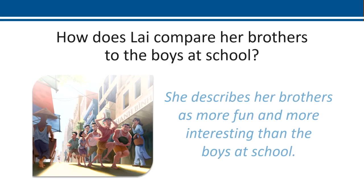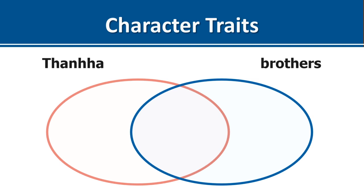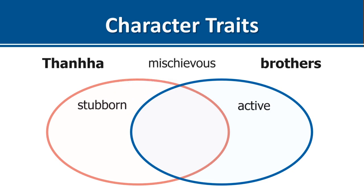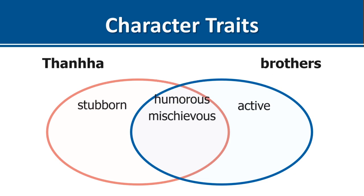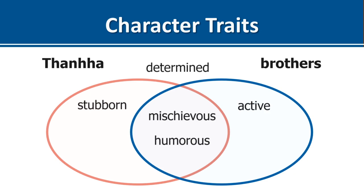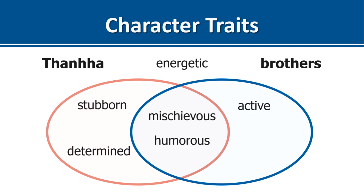Lai compares her brothers to the boys at school, describing her brothers as more fun and more interesting. Looking at character traits: the brothers are active, humorous, and energetic. Thanh Ha is stubborn and determined — she was determined to be like her brothers and do what they did. Mischievous and humorous could apply to both. There were some laugh-out-loud moments in this autobiography.